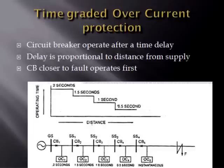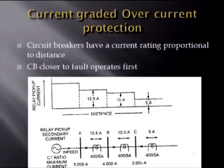Beginning with the time-graded protection system, this system incorporates circuit breakers with a delayed operation. The delay increases as we go up in the power system hierarchy, as we want the circuit breakers nearest to the fault to operate first and isolate that portion without affecting the rest of the system. So they operate more quickly than the circuit breakers which are closer to the power supply. Similarly, the current-graded protection system incorporates circuit breakers with a power rating inversely proportional to the distance from the generating station, as the power in the lines is greater near the supply.